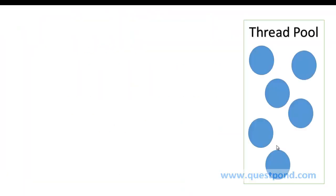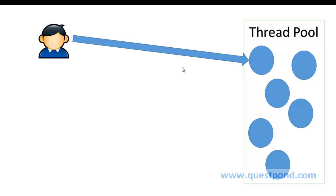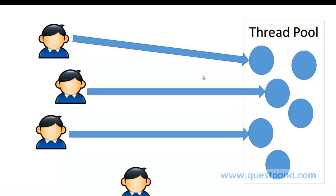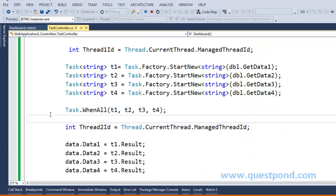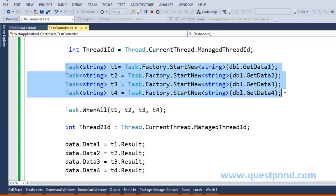But there is a problem here. IIS contains a thread pool with a set of threads. Each time a new request comes in, a thread from the pool is assigned to serve it and is released when the request is fully served. Now if a request is in wait mode — for example, our main thread is sitting at WhenAll doing nothing — that thread is blocked. If this keeps happening, we end up with thread starvation: new requests arrive but no threads are available to serve them.